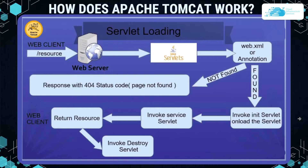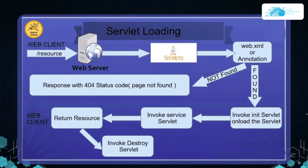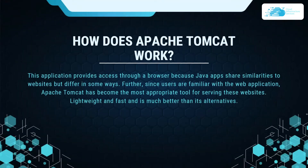The Java servlet accesses the web.xml or any annotation. If that particular request or web page is not found, then the Java servlet responds with a 404 status code, which is page not found. If the page is found, then the servlet init is invoked and the information is onloaded to the servlet. After that, the servlet service is invoked and the resource is returned to the web client. Once the resource has been returned, the destroy servlet is invoked.